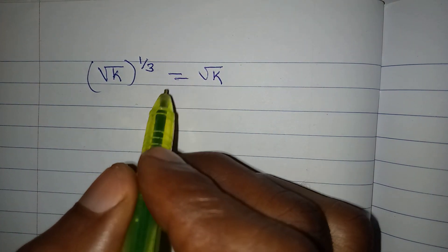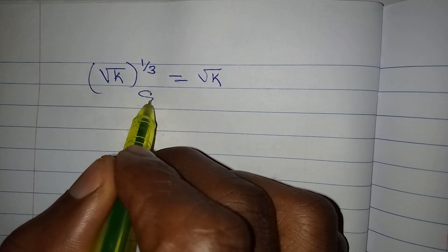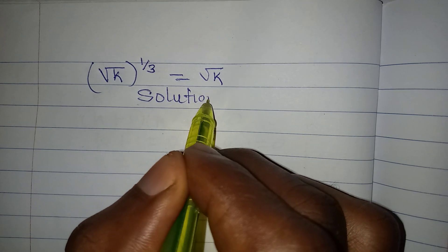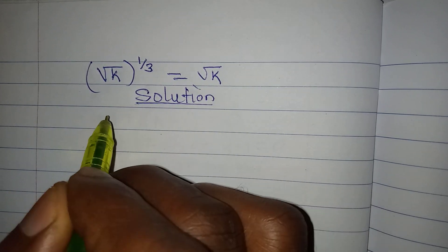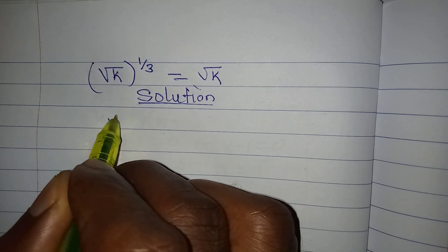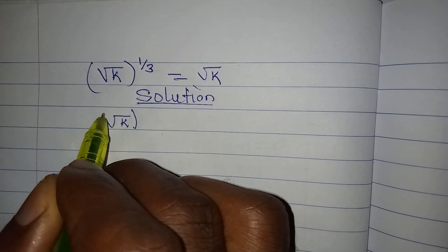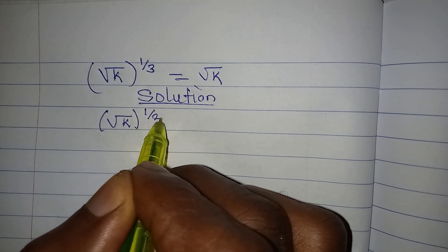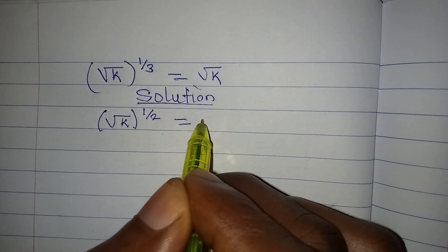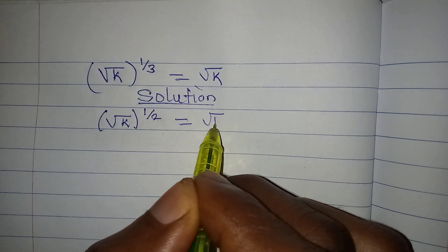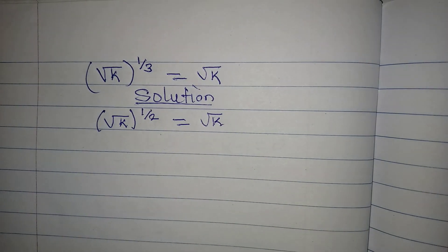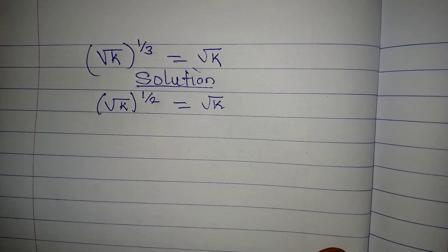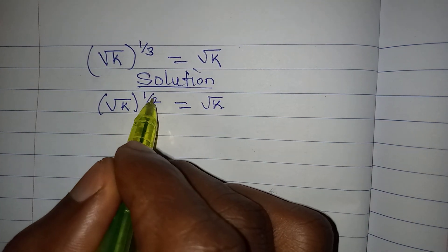Let us solve this problem right away. We have the square root of k to the power of 1/3 to be equal to the square root of k. This is simple — the power is actually 1/3.